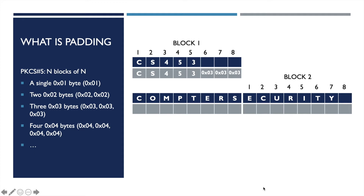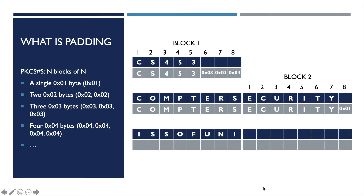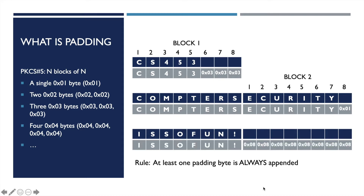For the string 'computer security', we have 15 characters, so we will need to add a single x01 byte at the end of the message to pad it. What if the size of our plain text message is already a multiple of the block size? As in the third example, we have exactly 8 characters that leaves no empty space in the first block. In this case, we have to follow the rule that at least one padding byte is always appended. Therefore, we will need to pad 8 bytes of x08s into the message.